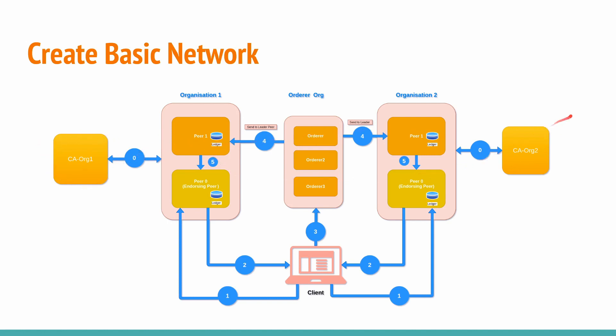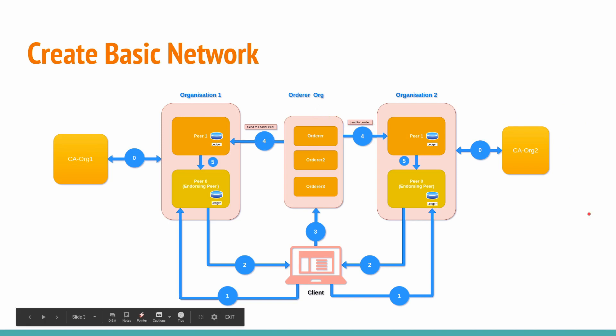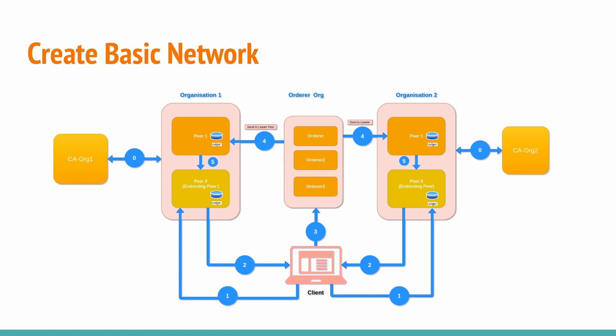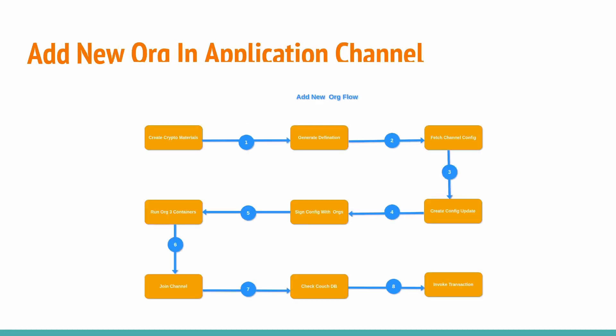Each organization will have a separate certificate authority — CA Organization 1 for Organization 1, and CA Organization 2 for Organization 2. In the orderer organization we will have three different Raft orderers. Using these different components we will create our basic network, create the channel, install and instantiate the chaincode, and finally invoke and query some transactions to verify previously added data.